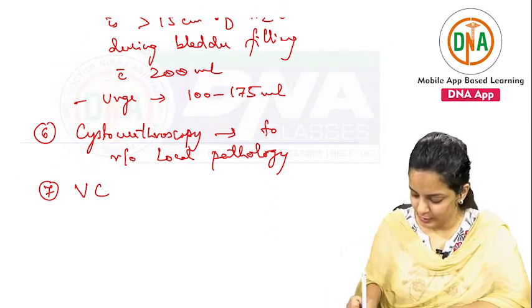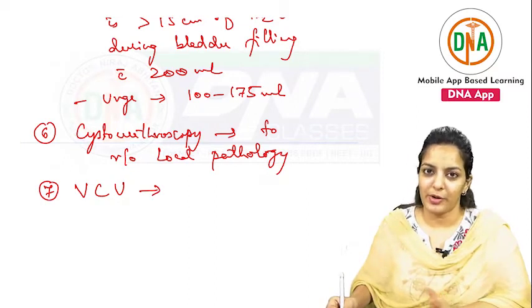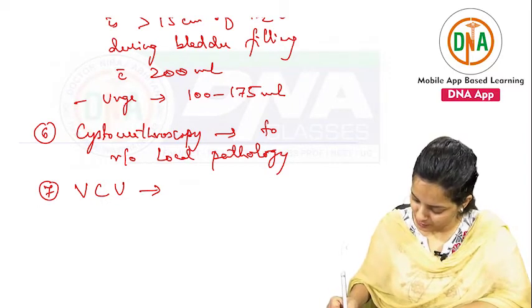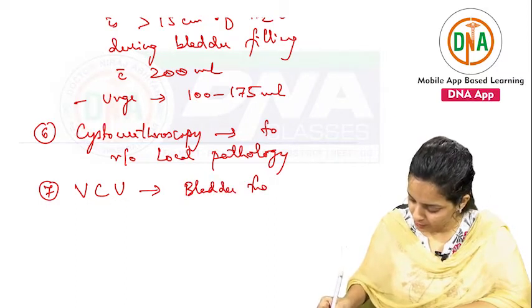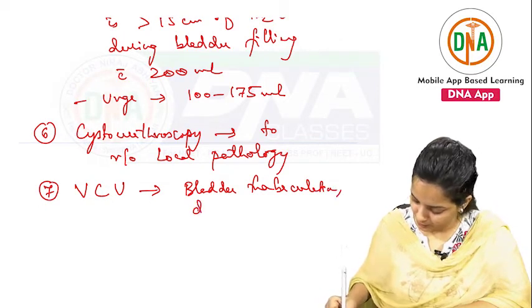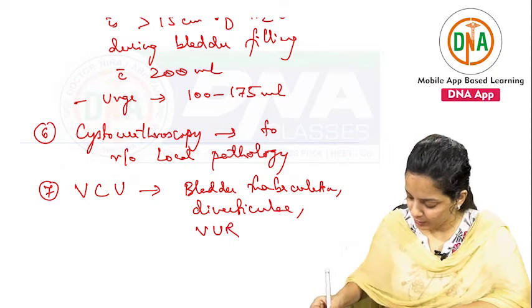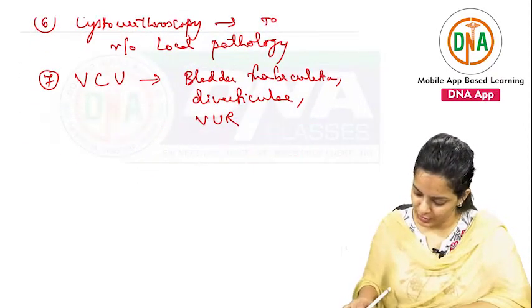A voiding cystourethrogram is done to look for bladder trabeculation, diverticuli, or any vesicoureteric reflux.